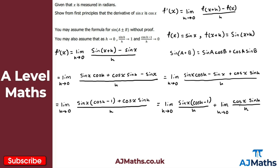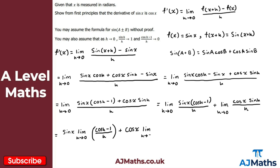Applying linearity one more time, I can factor sin x in front of the first limit and cos x in front of the second. This gives: sin x times the limit as h tends to zero of (cos h minus one) over h, plus cos x times the limit as h tends to zero of sin h over h — which are exactly the two expressions we need.